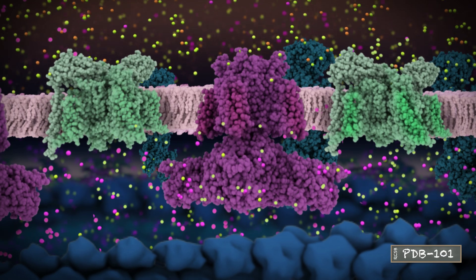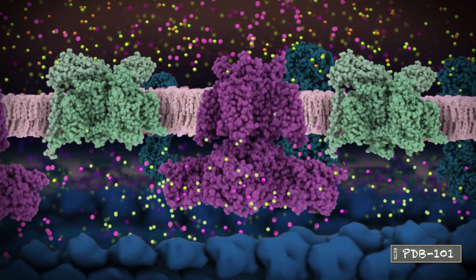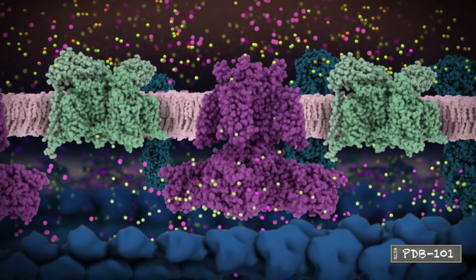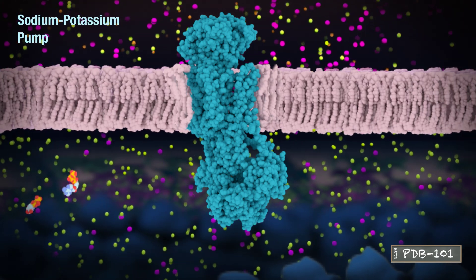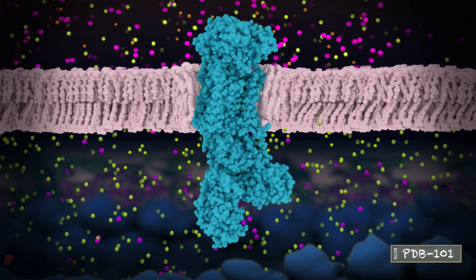After the signal has finished, the locations of ions have been reversed. Sodium concentration is high on the inside, and potassium concentration is high on the outside. The sodium and potassium pump restores the sodium and potassium gradients, making the cell ready to send another signal.